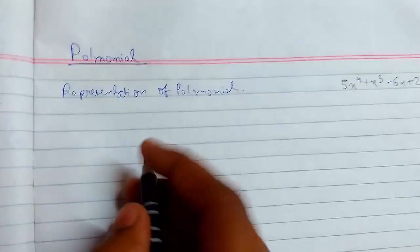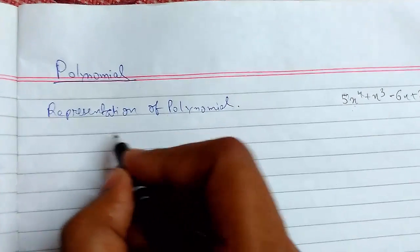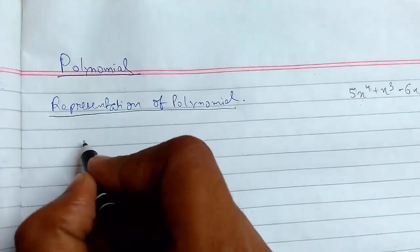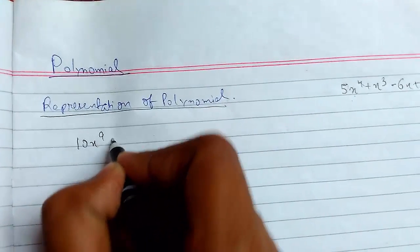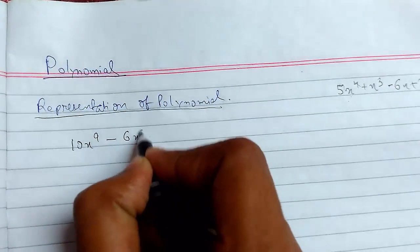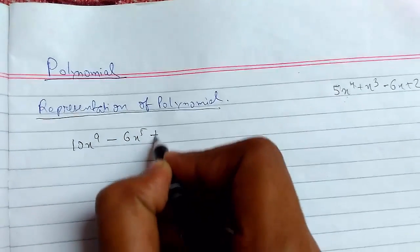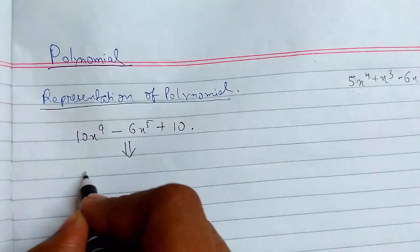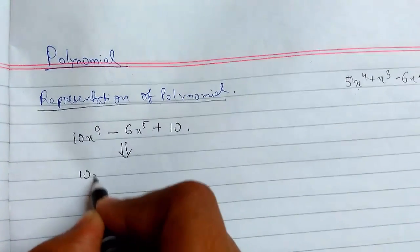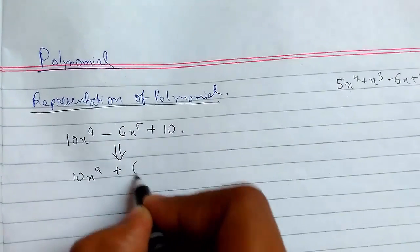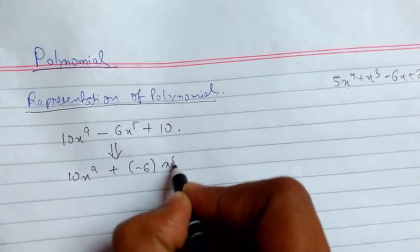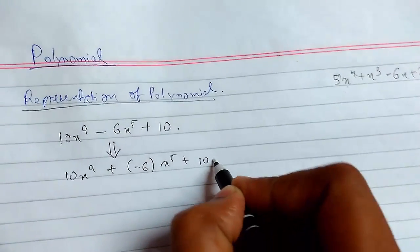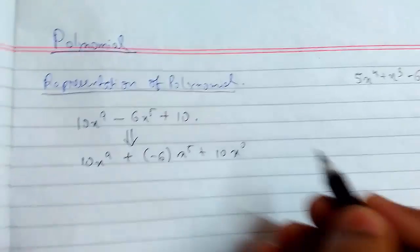We will start with the representation of a polynomial. Suppose we have an example like 10x to the power 9 minus 6x to the power 5 plus 10. We can also write it like this in computers. So this is a coefficient, and I have written it like this.